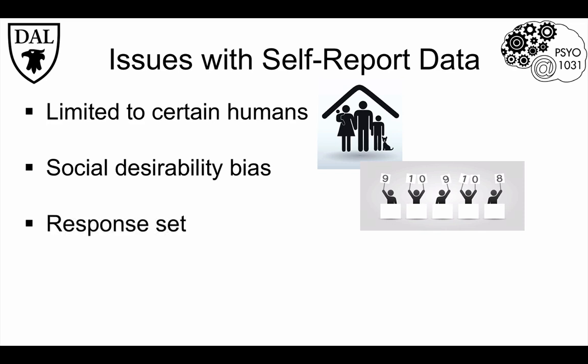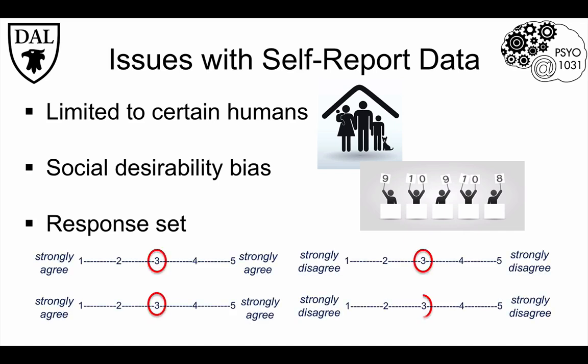A response set is when participants answer questions in a systematic way rather than giving true responses. Questionnaire-based surveys are prone to this issue. For instance, someone might choose the same response for each question. This can be difficult to deal with, since it's unclear if the participant really felt this way about all of the questions, which seems unlikely, or if they simply wanted to be done with the survey without reading the questions, which is more likely to happen, especially with long questionnaires.